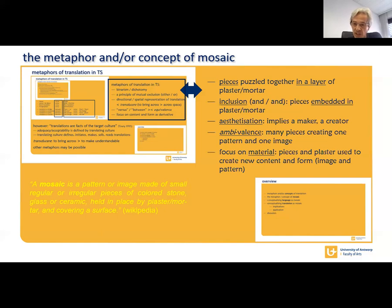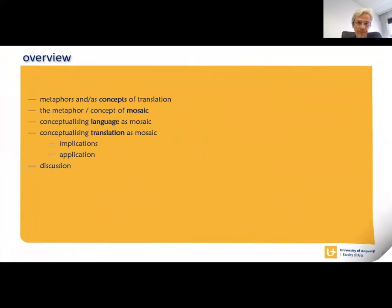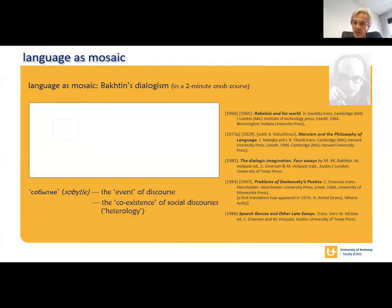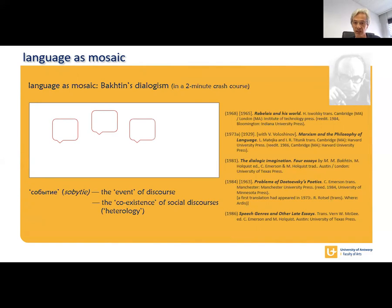But before looking at translation as a mosaic, let's have a look first at language. There is indeed a way of grounding the concept of translation as mosaic in a concept of language as mosaic. This concept or epistemology of language is or could be Michael Bakhtin's dialogism. According to Bakhtin, the use of language always is two things at the same time, for which he uses two meanings of a Russian word, sobitye, which means an event, but also literally an aggregate of beings, co-existence, togetherness. According to this theory, every utterance is a new event of discourse, but it also is co-existent.